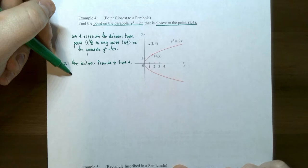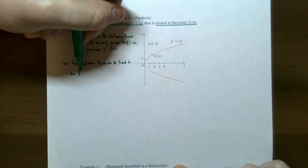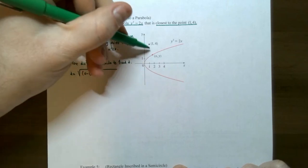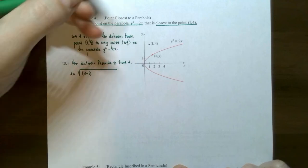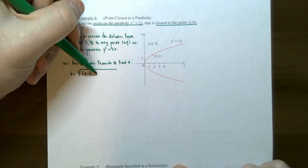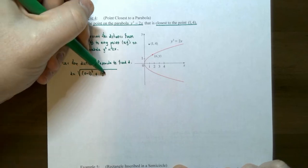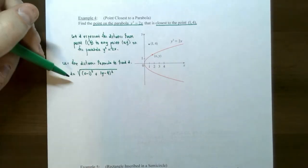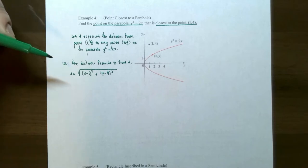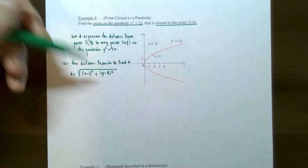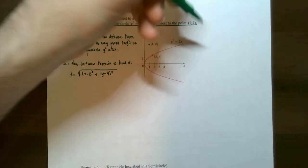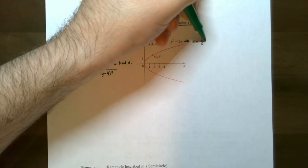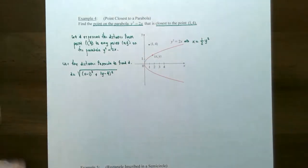From precalculus, the distance d is the square root of (x minus 1) all squared plus (y minus 4) all squared. We want to minimize d, so we take the derivative to find the critical numbers — but it's in terms of two variables. So let's use the equation of the parabola: y² = 2x means x = (1/2)y². Now let's substitute x = (1/2)y² into the distance equation.